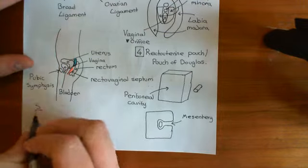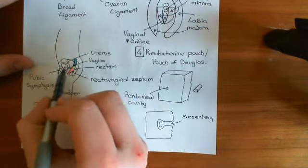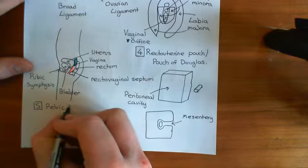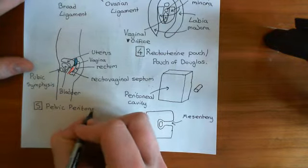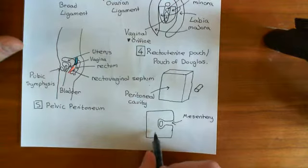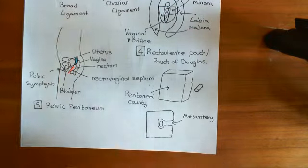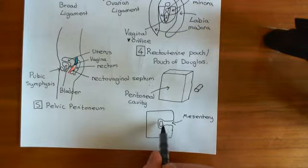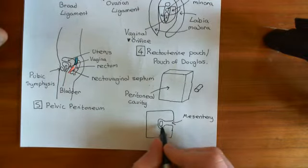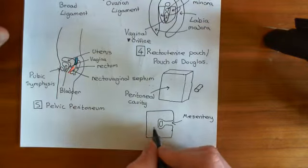The fifth most common place for endometriosis to occur is the pelvic peritoneum — so the peritoneal cavity in the pelvis generally, not specifically the recto-uterine pouch. The sixth most common place is actually inside the large and small intestine. If endometrial tissue is growing within the peritoneal cavity, it's in contact with the large and small bowel, which are dangling in the peritoneal cavity by their mesentery, and this endometrial tissue could potentially invade through the wall of the intestine.